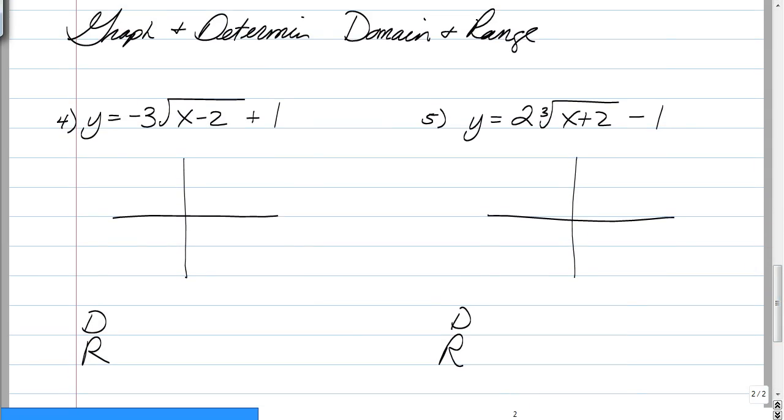So all we're going to do here is graph and determine the domain and range. So number 4, we have a square root that starts at 2, 1. It's going to be flipped upside down, and it's going to be multiplied by 3. So since the first one is just going to be jumping way down with a multiplier of 3, our graph is going to look like that.